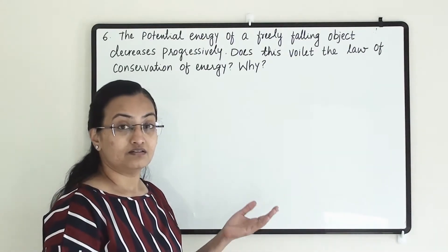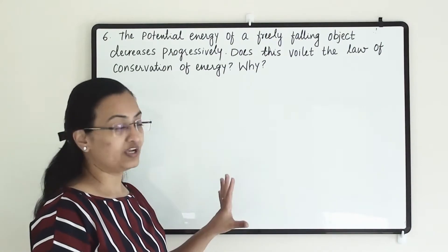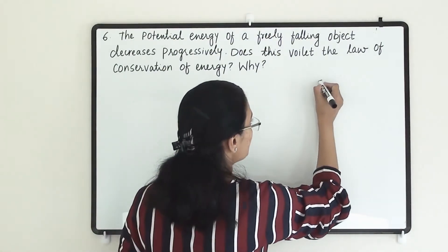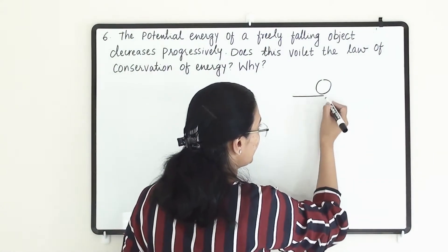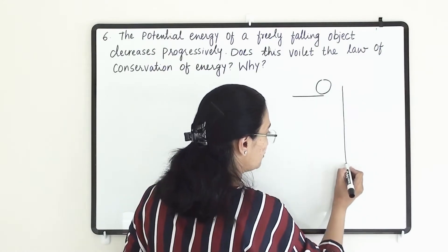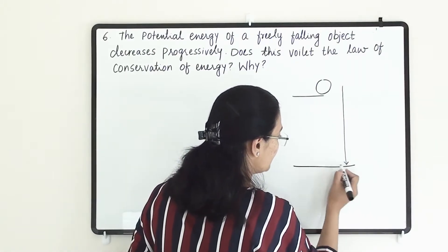Let us first understand the mechanism of a freely falling body. For example, this ball is falling from a certain height. It has started falling downward and has reached the ground.